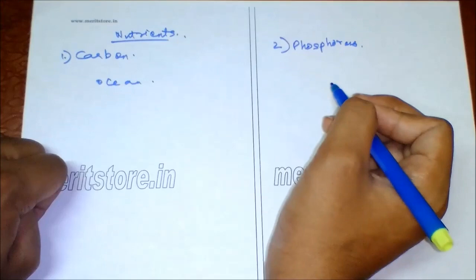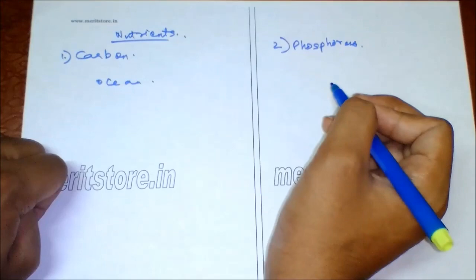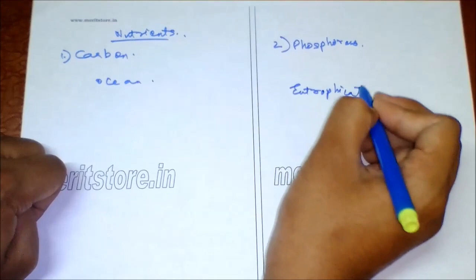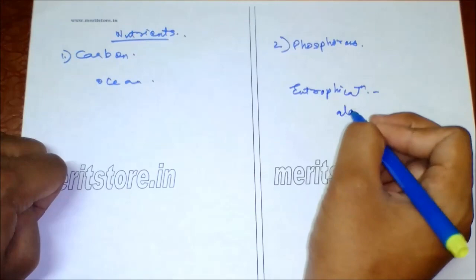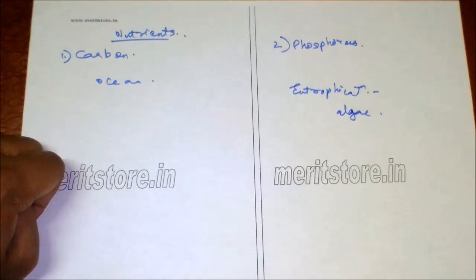Then there is a concept of eutrophication. Abundance of phosphates in water bodies causes overgrowth of algae, which depletes oxygen. Excreta of marine birds, guano deposits, are also rich in phosphorus.